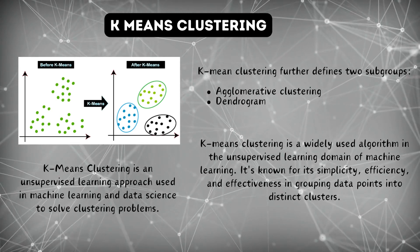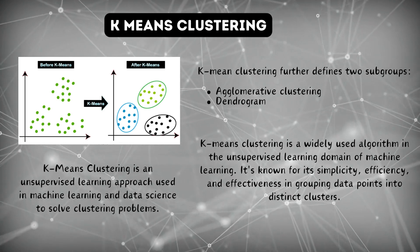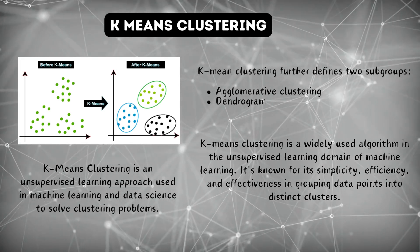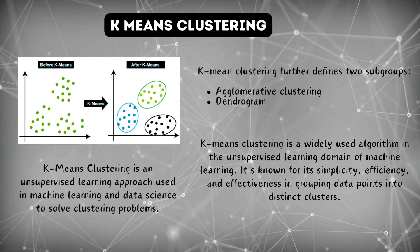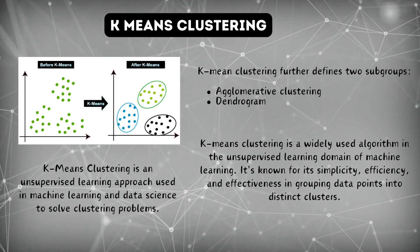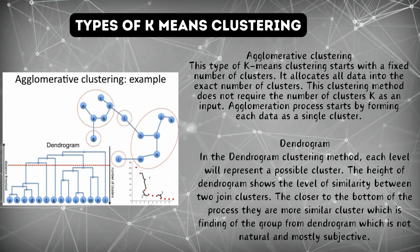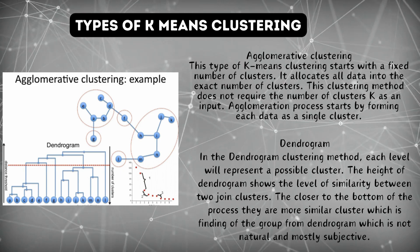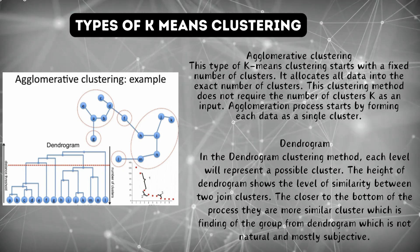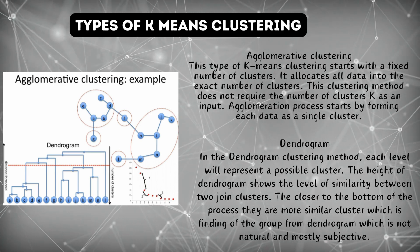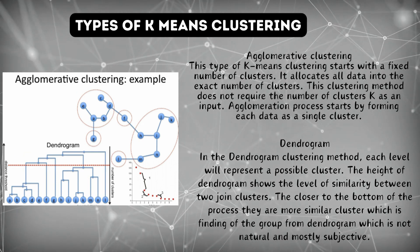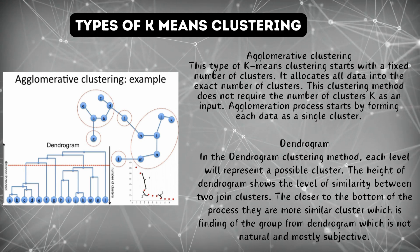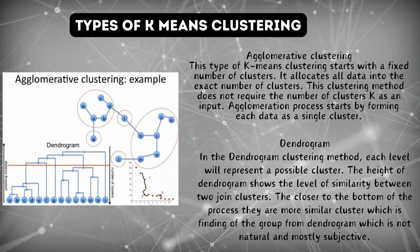K-means clustering is an unsupervised learning approach used in machine learning and data science to solve clustering problems. It is a widely used algorithm known for its simplicity, efficiency, and effectiveness in grouping data points into distinct clusters. K-means clustering further defines two subgroups: agglomerative and dendrogram. In agglomerative clustering, this type starts with a fixed number of clusters and allocates all data into that exact number, not requiring k as input. In the dendrogram clustering method, each level represents a possible cluster, and the height of the dendrogram shows the level of similarity between two joined clusters.